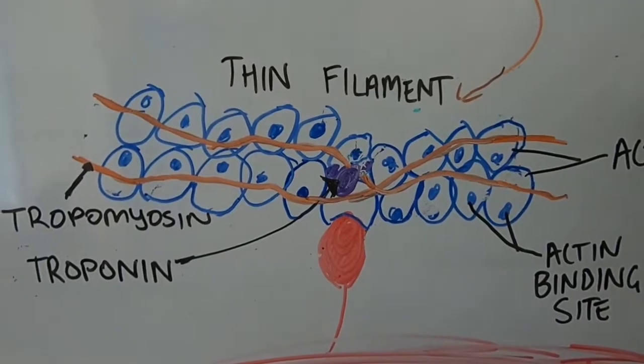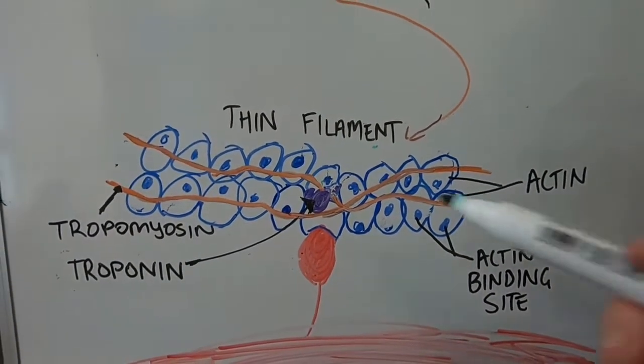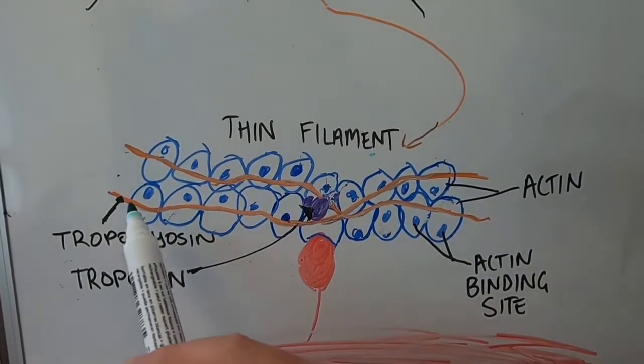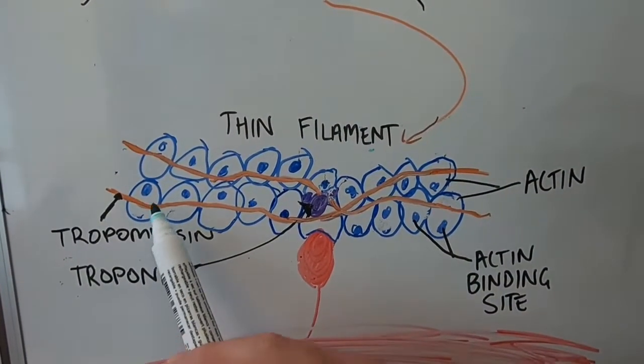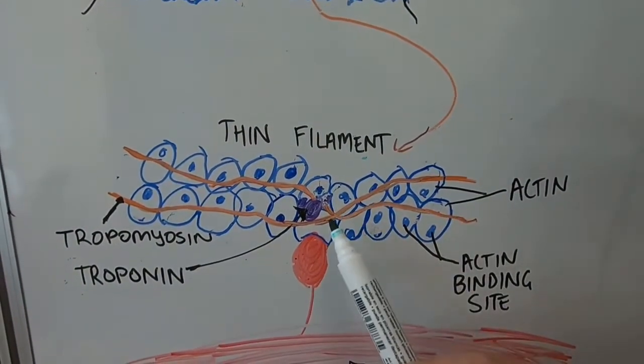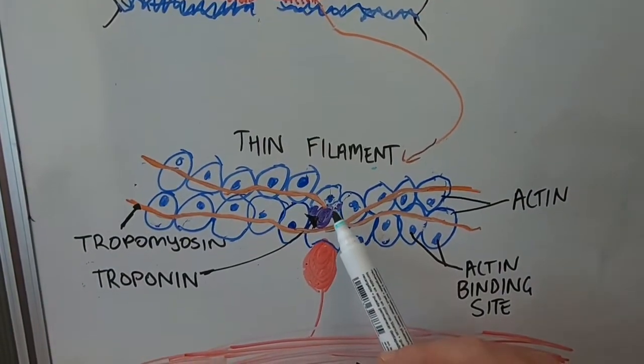It's because when there's no calcium around, what normally happens is that this orange rope-like protein called tropomyosin sits usually on top of the actin binding sites, and this is because troponin isn't being activated by calcium.